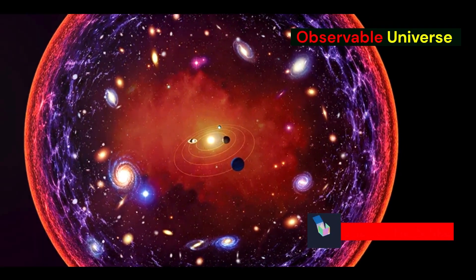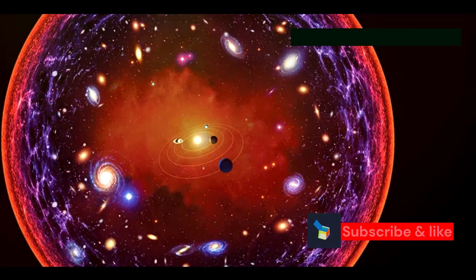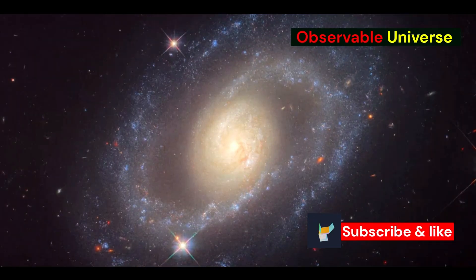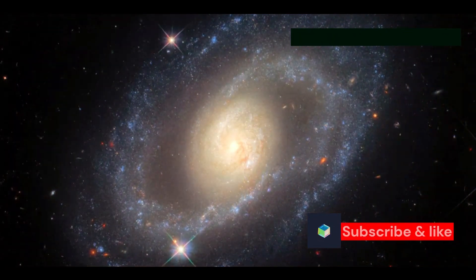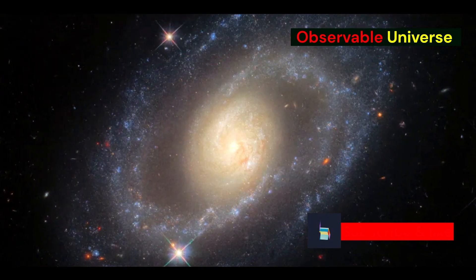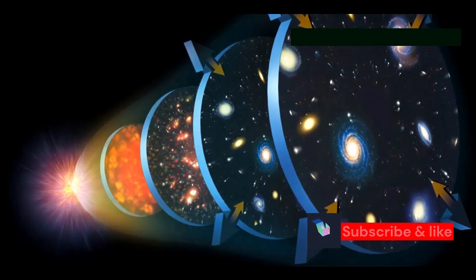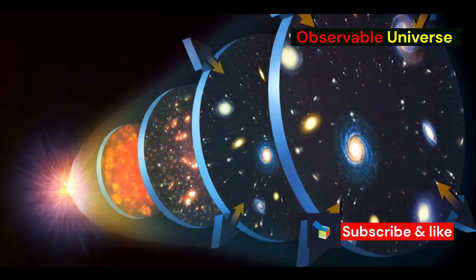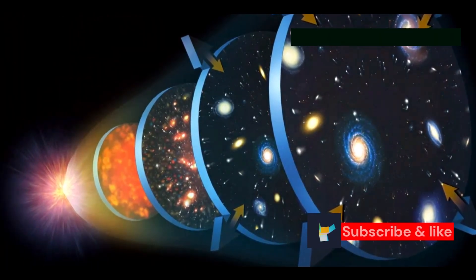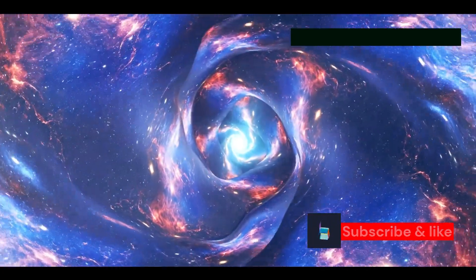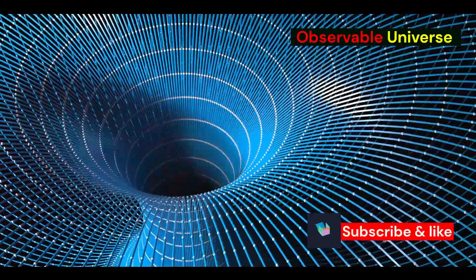Each with its own unique set of physical laws and constants. Another possibility is that the universe is finite but unbounded, like the surface of a sphere. In this scenario, if you could travel far enough in one direction, you would eventually end up back where you started, much like circumnavigating the globe.